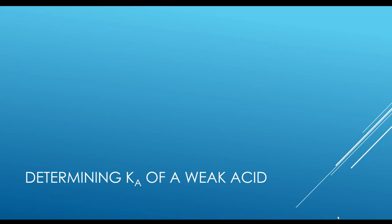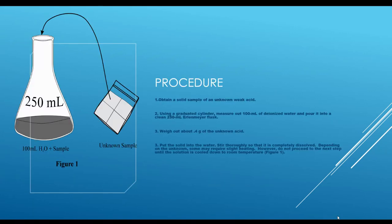We're going to determine the Ka of a weak acid. Our procedure is: we'll take a graduated cylinder and measure out 100 mL of deionized water and pour it into a clean 250 mL Erlenmeyer flask. We'll weigh out about 0.4 grams of the unknown acid and put the solid into the water to make a solution of weak acid. We'll stir it thoroughly so it's completely dissolved — if the acid didn't dissolve well, we'd heat it and then wait for it to cool.